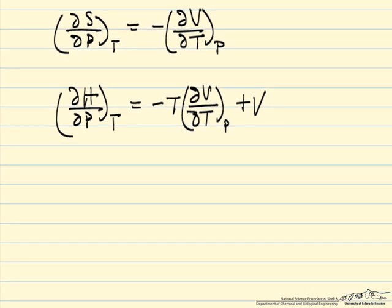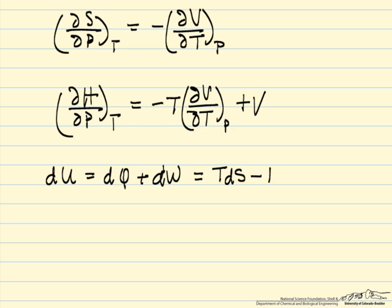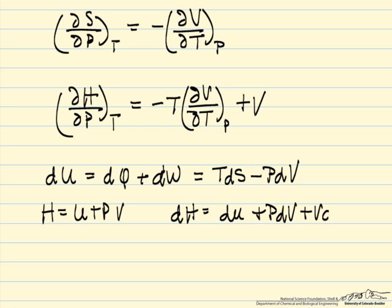So let's go back and look at the differential expression for the first law, for a closed system. And if we do this reversibly, dQ is TdS, and dW is minus PdV. So dH is dU plus PdV plus VdP, which equals TdS minus PdV plus PdV plus VdP.